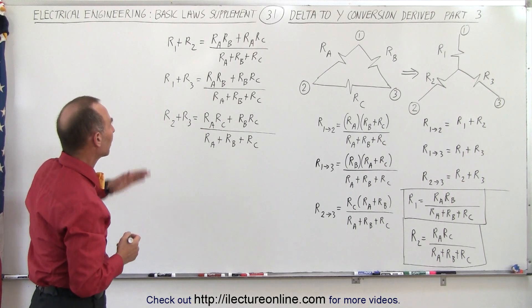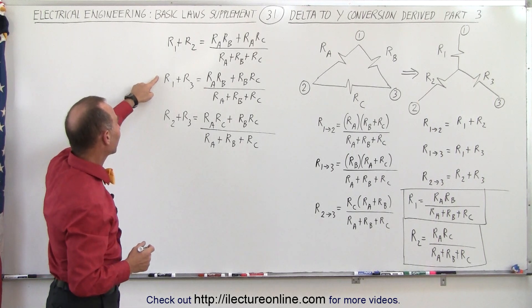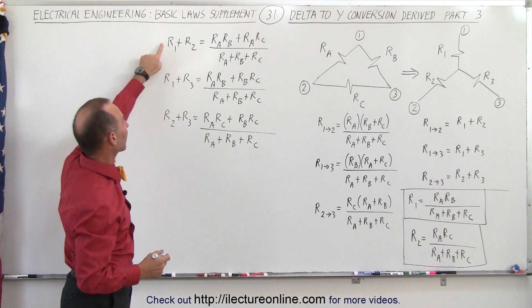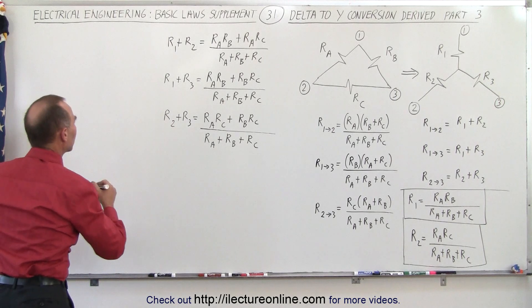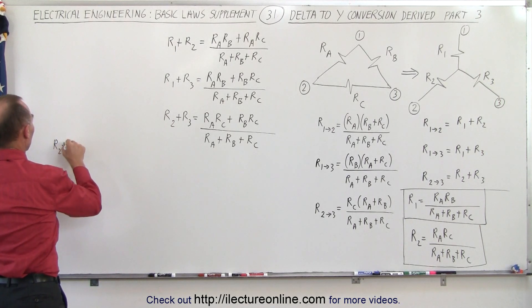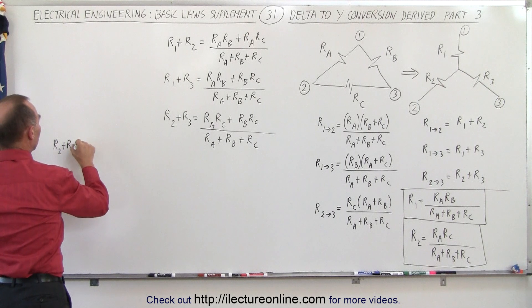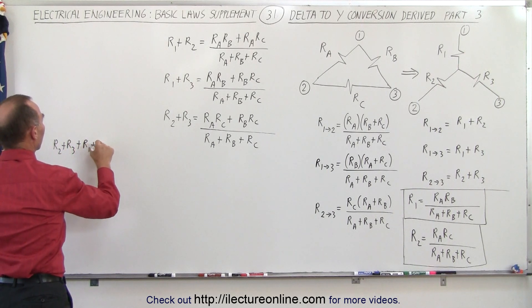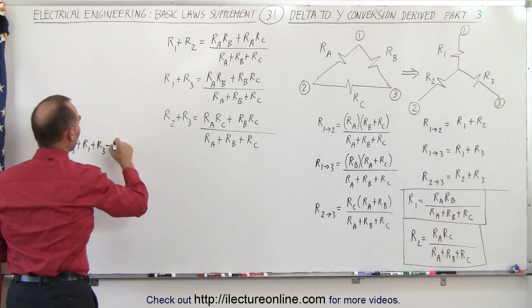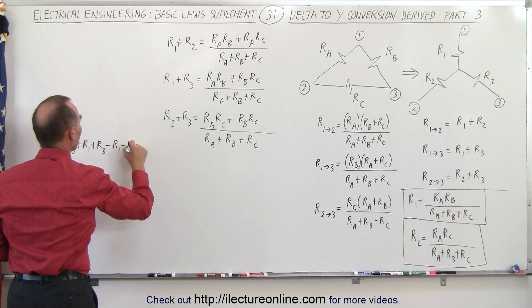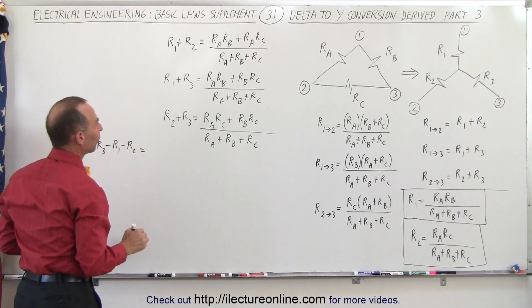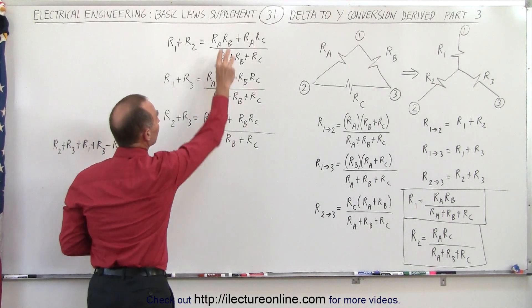So to do that, here on the left side we're going to add these two together and subtract this one. So we subtract from that R1 and R2, and on the right side we have to add these two together and subtract this one.